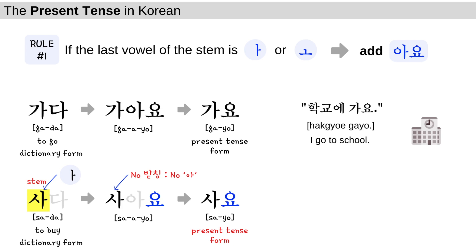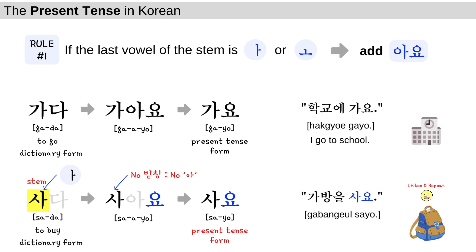Let's take a look at the sample sentence: 가방을 사요 — I buy a bag. 가방을 사요.